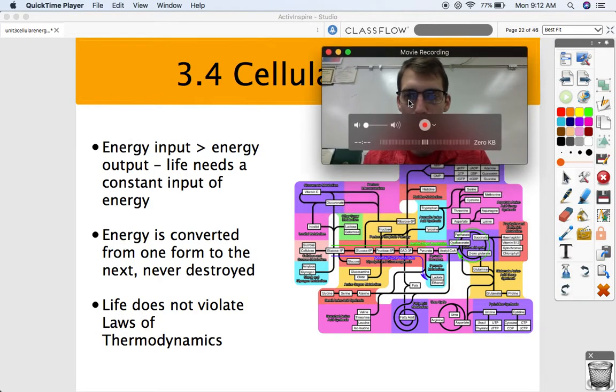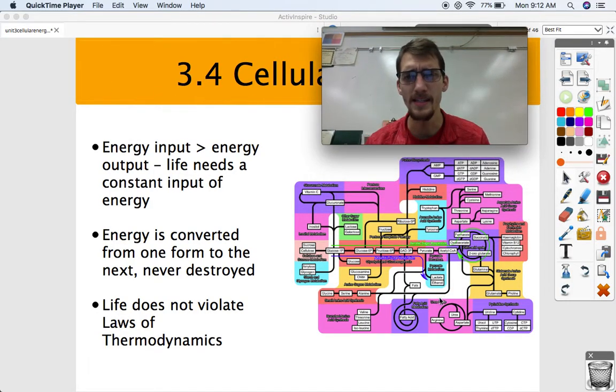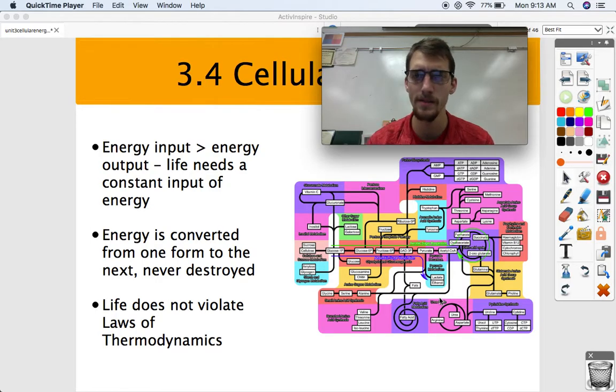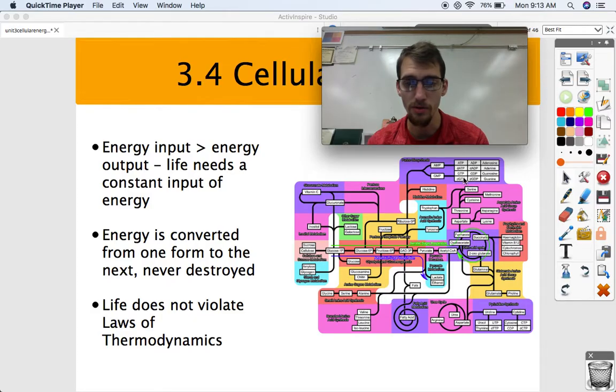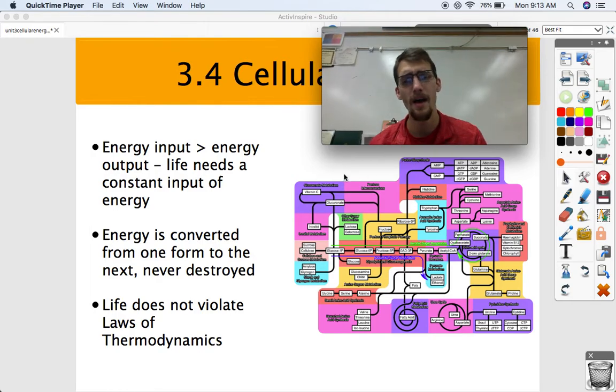So if you look at this map below me here, this is a metabolic map of most cells. It shows a very general process about how a lot of different molecules are made. You've got your nucleotides over here, fatty acids over here, a bunch of amino acids over here, carbohydrates. It's really showing a summary of a lot of different metabolic pathways.